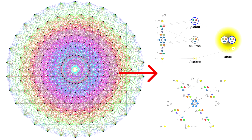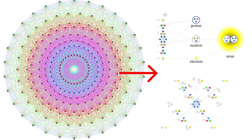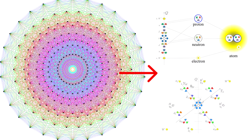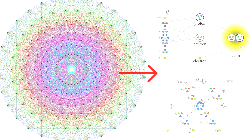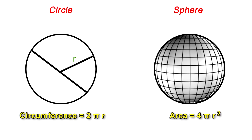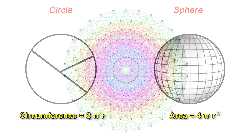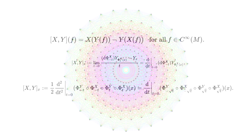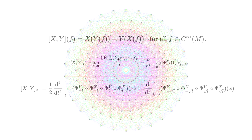What you have to understand is that all geometric structures have their underpinnings in mathematics — that is, all geometry can be expressed as math. For example, a circle is 2 times pi times r. A sphere is 4 times pi times r squared. This holds true for this E8 object as well. It's much more complicated mathematics, but the structure can be expressed in mathematical terms.